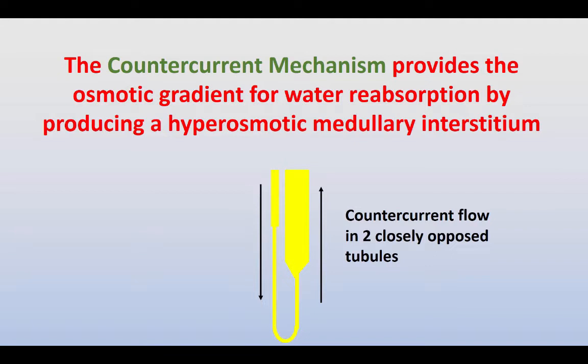First of all, there is a mechanism known as countercurrent, which lies at the heart of making a hyperosmotic medullary interstitium. A countercurrent flow happens if you have two closely opposed tubules and the flow runs in opposite directions in each.